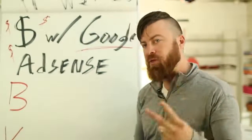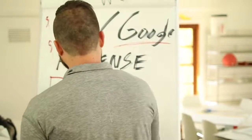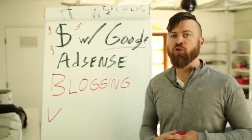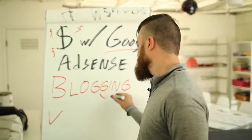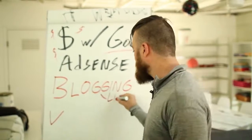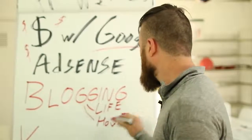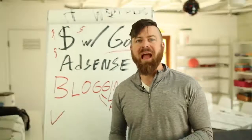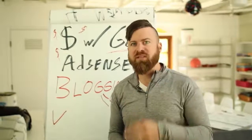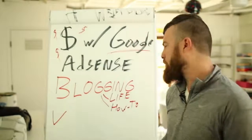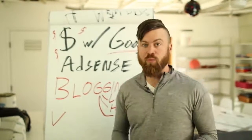That brings us to the 2 main methods of making money with Google AdSense. The first is blogging, and there are a few ways to do it. The first is just kind of blogging about life. The second is blogging about how-to — showing people how to do something, like how to dress yourself for success or how to color your hair in 4 simple steps, what the best baby diapers are, etc. And also news — you can start a news site and people will visit your website.